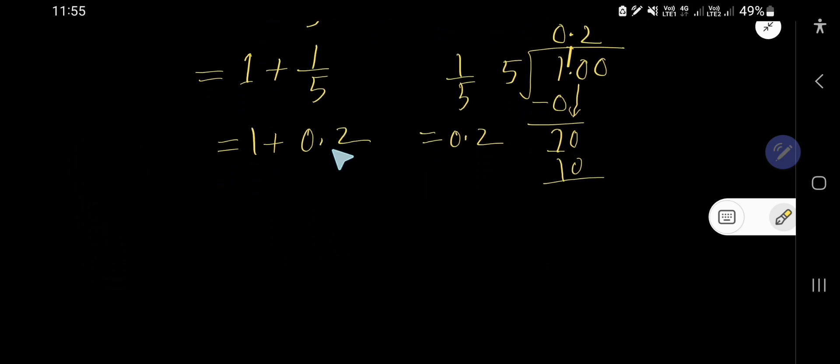Now look, one is a whole number, this is a decimal number, so we can write the whole number as a decimal number. Then just line up the decimal numbers. Now add: two point then one, that is 1.2.